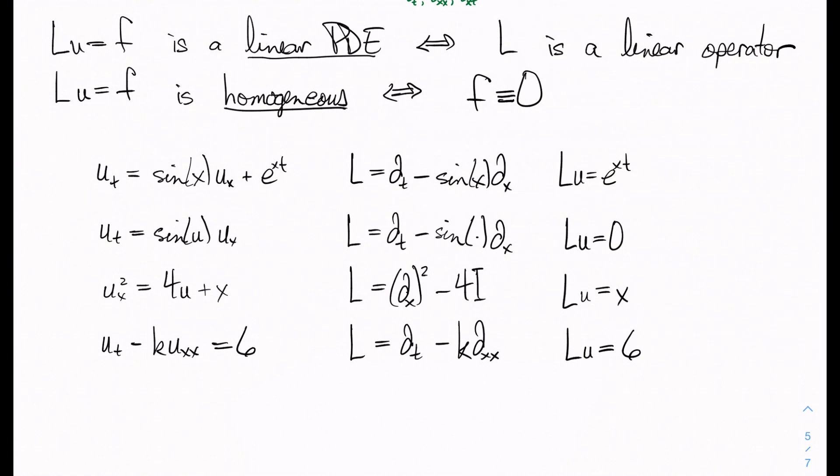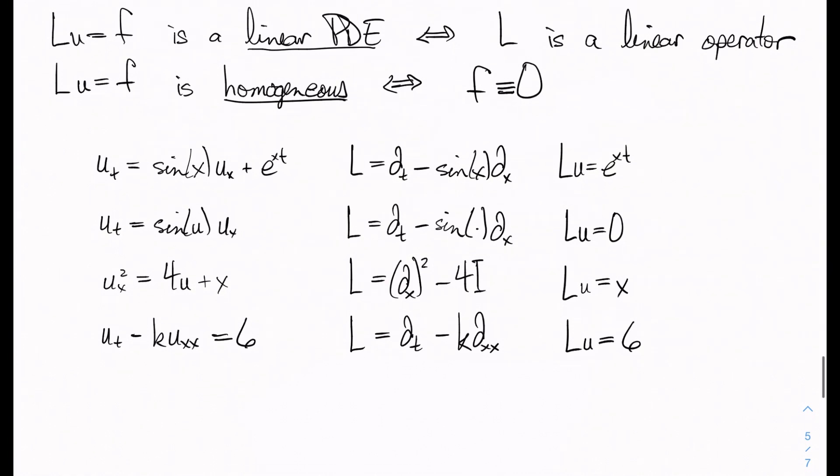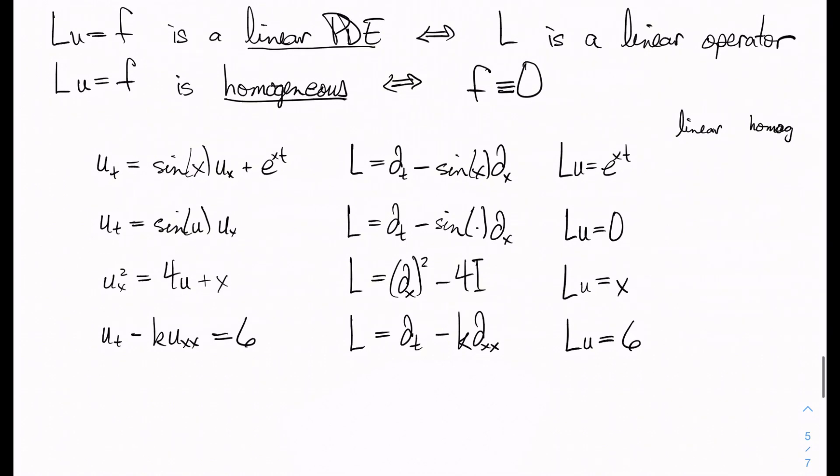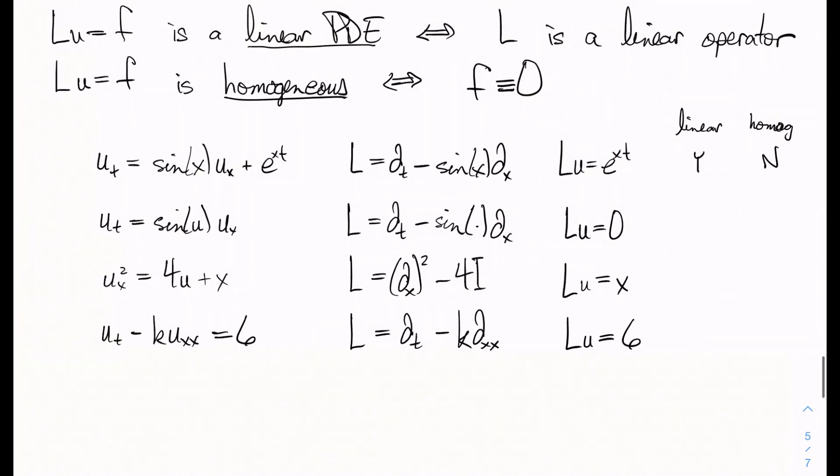So let's see now, in terms of linear and homogeneous: this one is linear but not homogeneous because it has this non-zero f here. The next one is not linear because we have this sine of u term right here that's not a function of the independent variables only, it includes the state variable. That one is not linear. It is homogeneous because we have a zero.